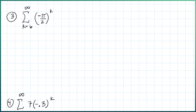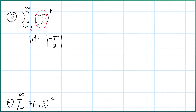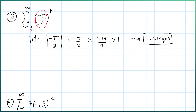For example three, notice the index starts at 6, so the first term is whatever it is when k = 6. But first, look at the common ratio: it's -π/2. In absolute value that's π/2, approximately 3.14/2, which is greater than one. I don't need to go further — by our geometric series proof, this is diverging.